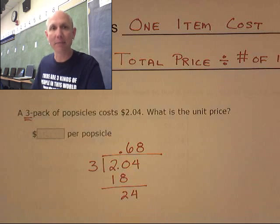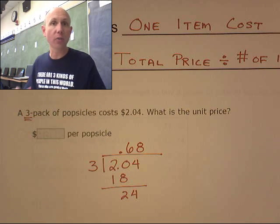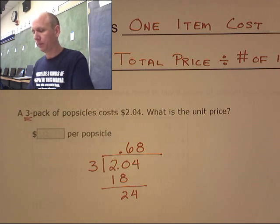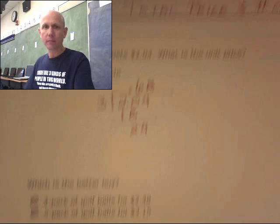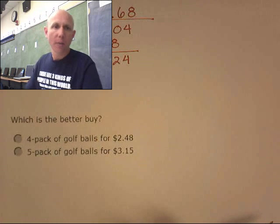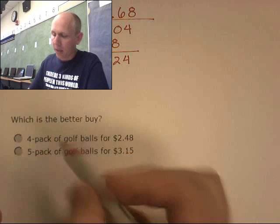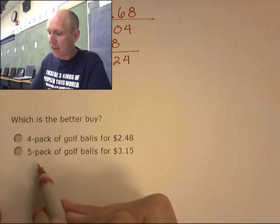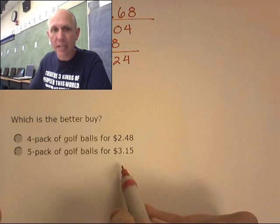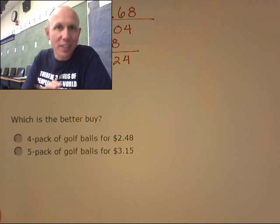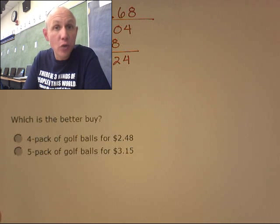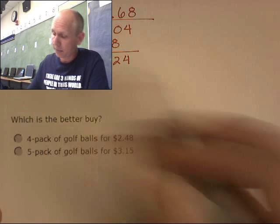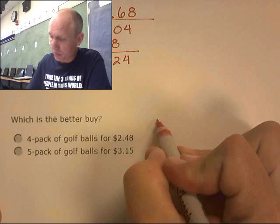All right, which is the better deal? A four-pack of golf balls for $2.48 or a five-pack of golf balls for $3.15? The trick to this guy is to get the unit cost of each of them and then decide which one's the better deal. So it's all about the unit cost.